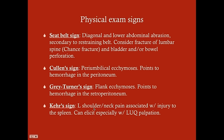Some physical exam signs you may see in abdominal trauma patients. First are seatbelt signs — abrasions due to wearing a seat belt. One of the most common causes of abdominal trauma is a motor vehicle accident. In a high-energy collision, you'll see abrasion on the chest and abdomen. Make sure to ascertain whether the patient was wearing both the diagonal belt and the lap belt, as children are sometimes only wearing a lap belt. If you see a seatbelt sign, consider a lumbar spinal fracture — called a chance fracture — or thoracic/cervical spinal fracture.